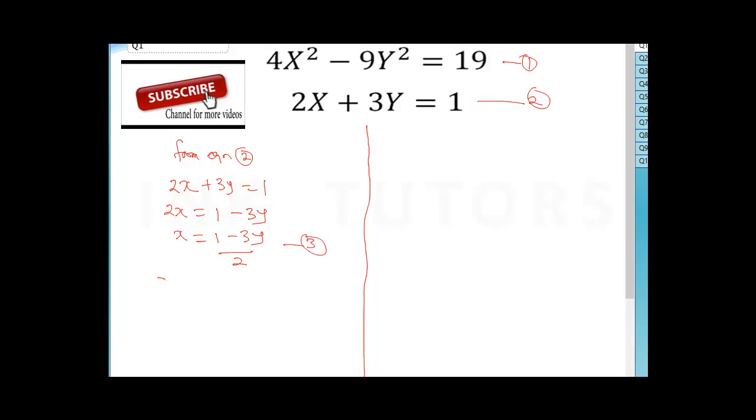Now, the problem I have with this is if I substitute into equation one, I'll call my x as (1 - 3y)/2 all squared minus 9y² = 19. Now see the problem with this.